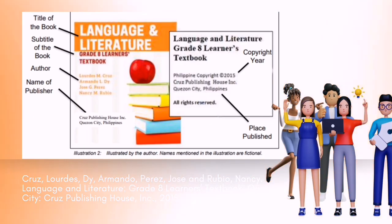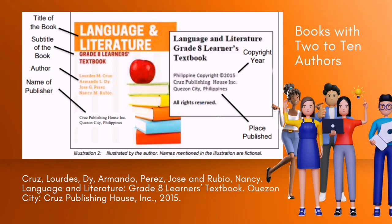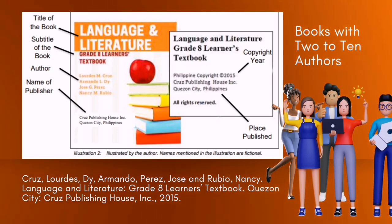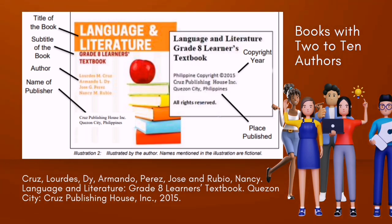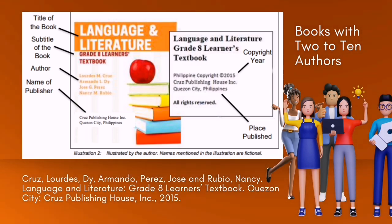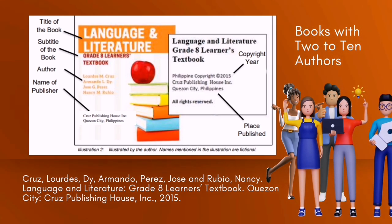Books with two to ten authors. Example: Cruz, Lord Esti; Armando, Perez, Jose; and Rubio, Nancy. Language and Literature: Grade 8 Learner's Textbook. Quezon City: Cruz Publishing House, Inc. 2015. Tip: Always follow correct punctuation marks just like in the example.